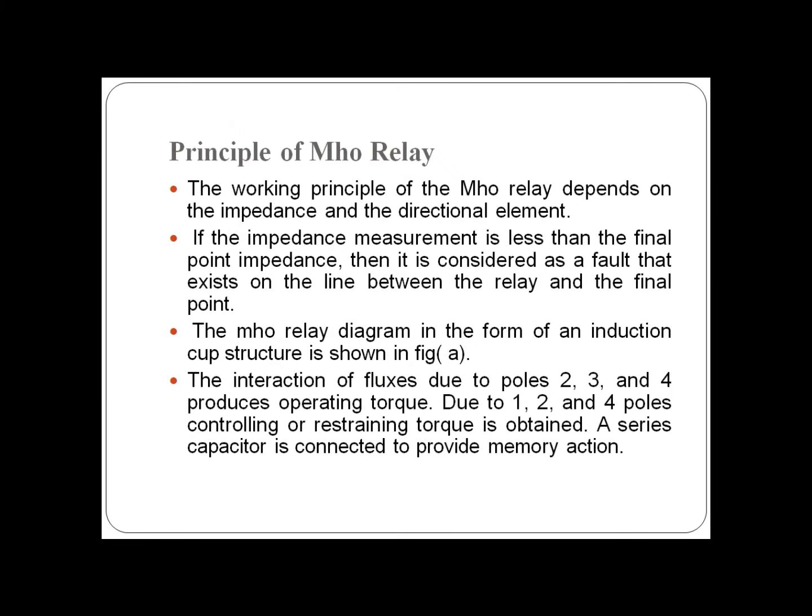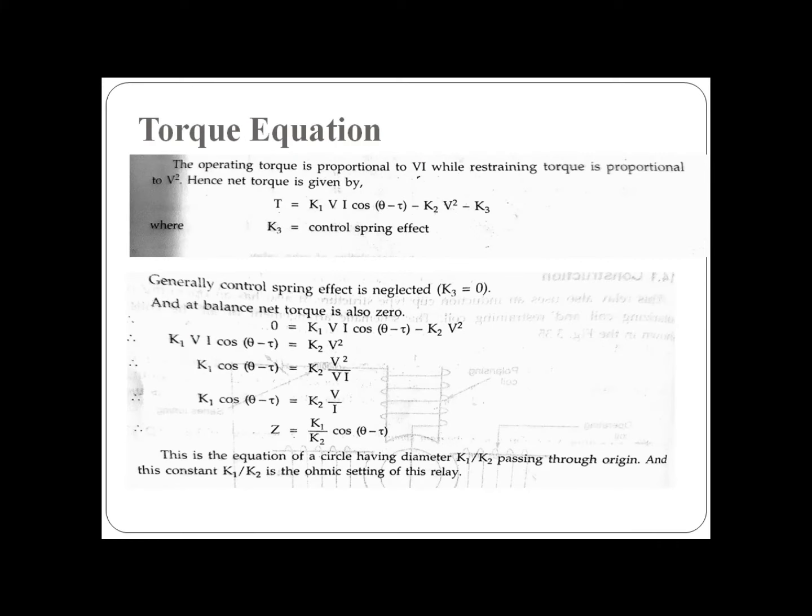These are torque equations of a Mho relay. The operating torque is proportional to VI, while restraining torque is proportional to V². The total torque T equals K₁VI cos(θ - τ) minus K₂V².